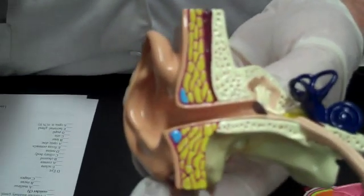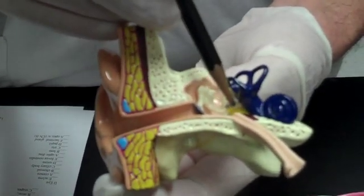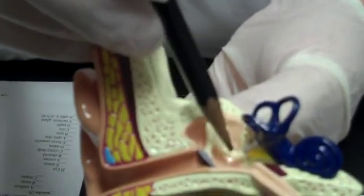And lastly, we have the three ossicles, the smallest bones in the body. Malus, incus, stapes. Malus is a hammer. Incus is the anvil. Stapes is the stirrup.